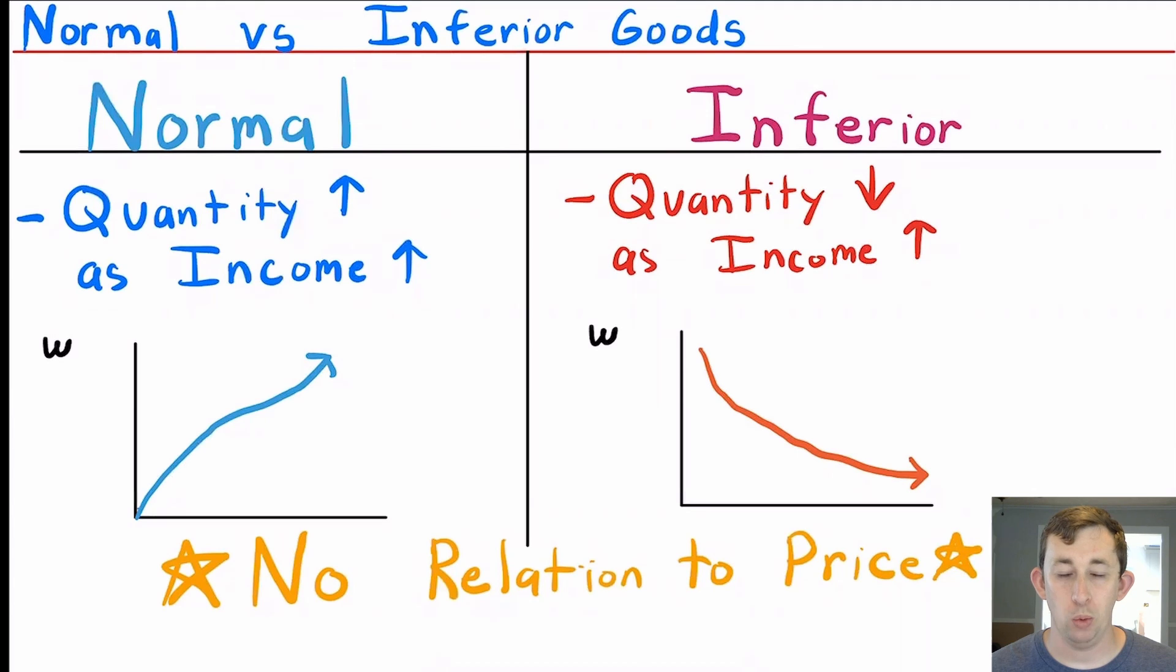Normal and inferior goods are based on the wealth expansion. I've talked about how we derive the wealth expansion in a previous video. But the difference between normal and inferior goods is pretty simple.